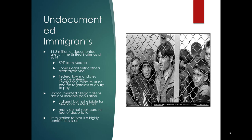As of 2014, there were 11.3 million undocumented aliens in the United States, 50% from Mexico — some entering illegally, but others overstaying visas. Federal law mandates that anyone entering an emergency room must be treated regardless of ability to pay, meaning some people have no way to access health care until they are desperately ill. Undocumented individuals are considered a vulnerable population; many do not seek care for fear of deportation. The indigent but not eligible for Medicare or Medicaid population includes these people, and immigration reform remains a highly contentious issue.